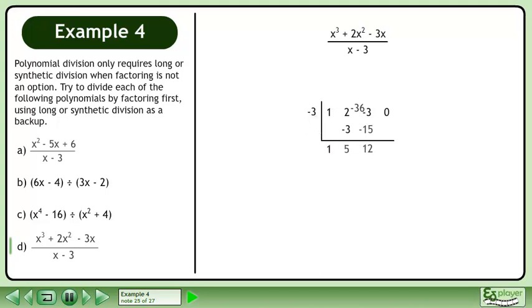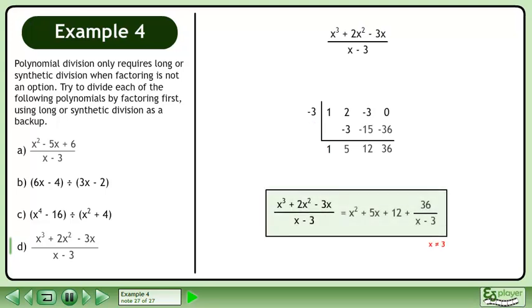12 times -3 equals -36. Subtract. x³+2x²-3x divided by x-3 equals x²+5x+12 plus 36 over x-3. We have the restriction that x cannot equal 3.